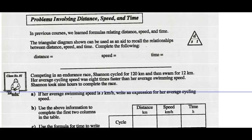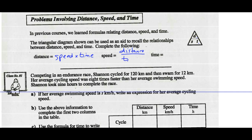Now, problems involving distance, speed, and time — we've seen this before. Distance equals speed times time. If I want to solve for speed, that would be distance divided by time. If I want to solve for time, that would be distance divided by speed. This triangle tells us the equations when we're dealing with distance, speed, time problems.